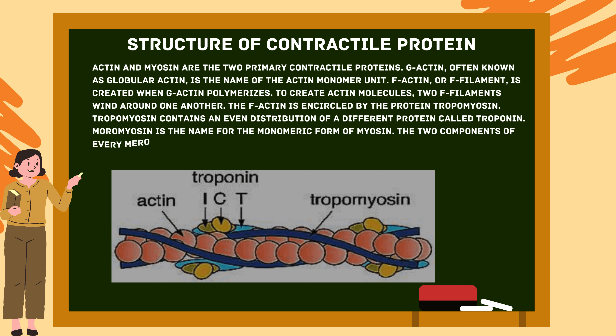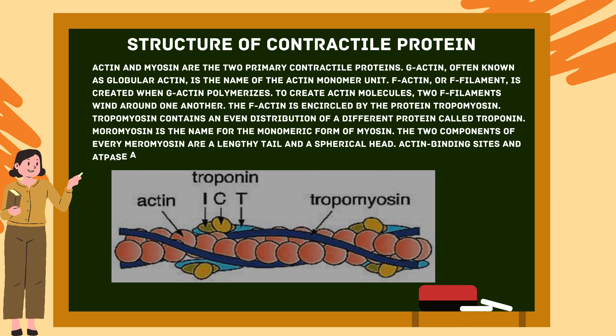Tropomyosin contains an evenly distributed protein called troponin. Meromyosin is the monomeric form of myosin. Every meromyosin has two components: a lengthy tail and a spherical head. The spherical head contains actin binding sites and ATPase activity.